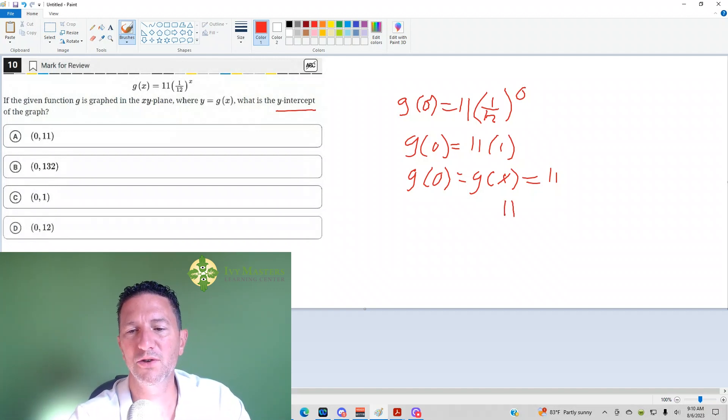So that's your y-intercept. Now when you look at the answer, it's probably going to be A, but what you're saying about the y-intercept, once again, is that's where x is 0. So your coordinate of the y-intercept is actually 0, 11. A is your answer.